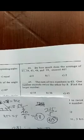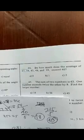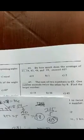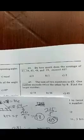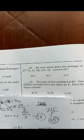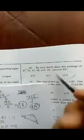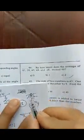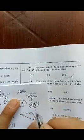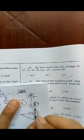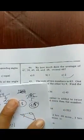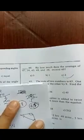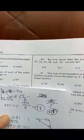So it's 47 plus 38 plus 43 plus 48 plus 29 equals 205, and 205 divided by 5 is 41. So 41 minus 40 is 1 — I'm sorry, I misread it earlier.